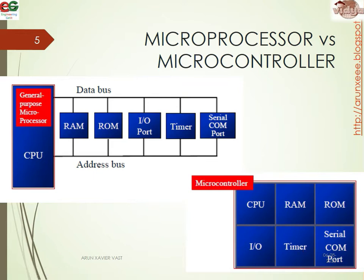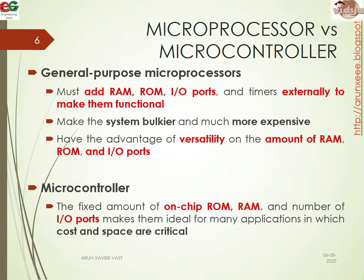That means we do not need to connect any external RAM, ROM, or I/O ports to the microcontroller. That is the basic difference. In a general purpose microprocessor, we need to add RAM, ROM, I/O ports, and timers externally to make them function, and this may make the system bulkier and more expensive. So if you are adding more RAM and ROM, the system will be bulkier. If you need to use any small type of systems, we need to use a microcontroller. The main advantage is that if we need 16 GB of RAM, we can add it externally very easily, but the system will be bulkier and expensive.